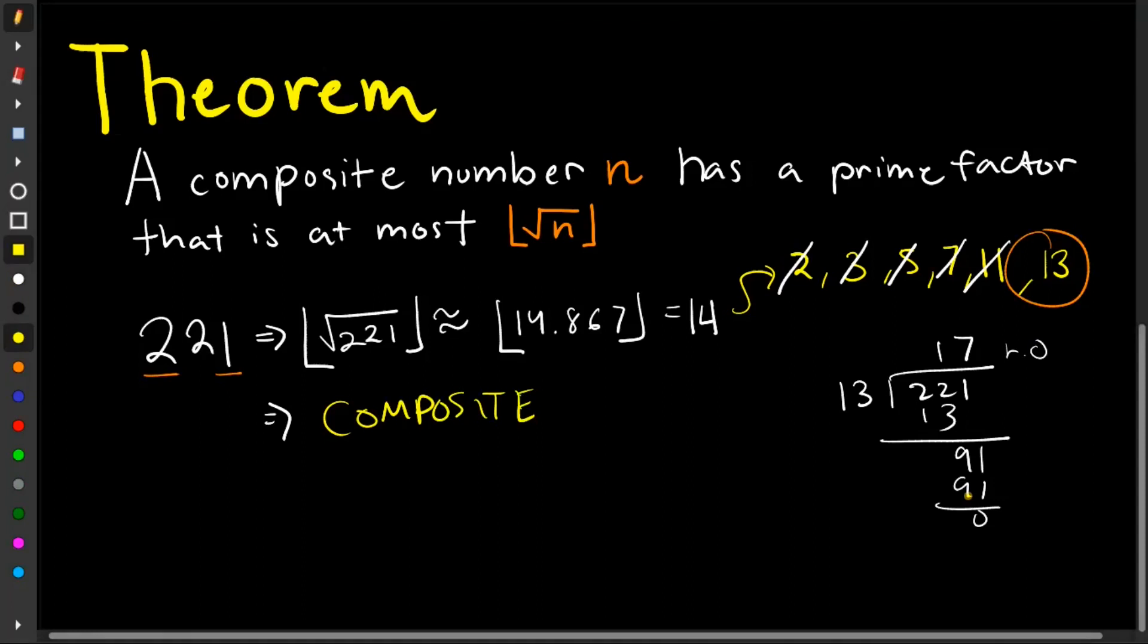So that's basically how we apply the theorem. What we do is we limit our choices on the possible prime factors that a number has. By doing this, we are able to quickly determine if a number is prime or composite. So that's all for this video.